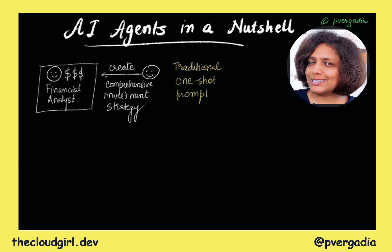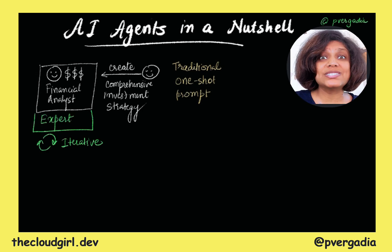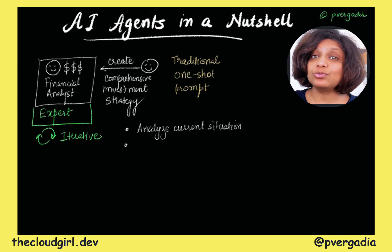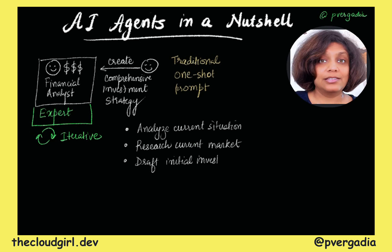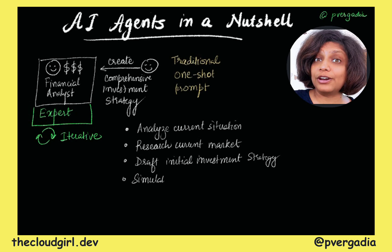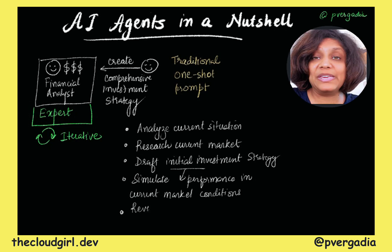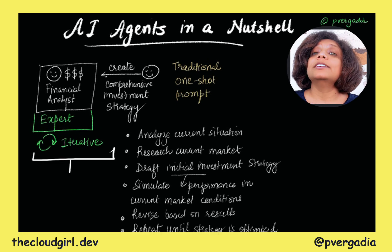But that's not how expert financial advisors work. Experts work on this iteratively. They might analyze the client's financial situation and goals, research current market trends and economic indicators, draft an initial investment strategy, simulate the strategy's performance under various market conditions, revise based on results, and repeat until the strategy is optimized. This iterative process is what we call an agentic workflow — it's more like how a skilled financial advisor would approach the task, and it produces much better results.